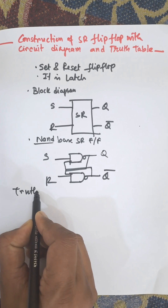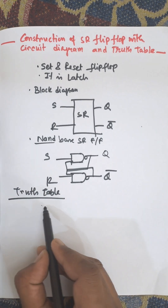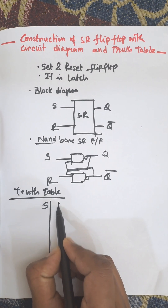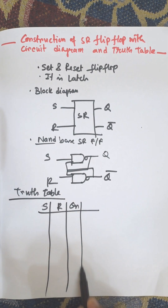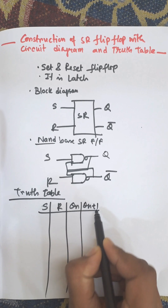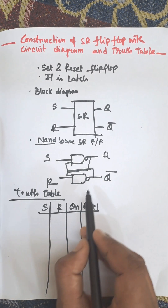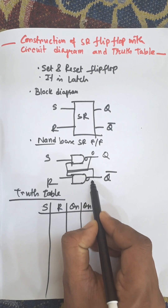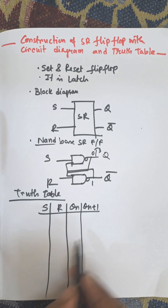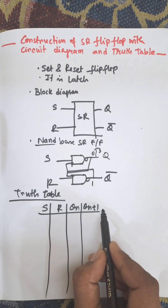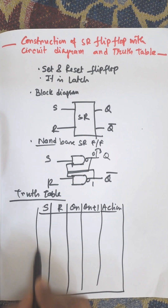Now the truth table. The truth table consists of S input, R input, and QN — where QN is the present state and QN+1 is the next state. The final column is the action. We need to remember this table.